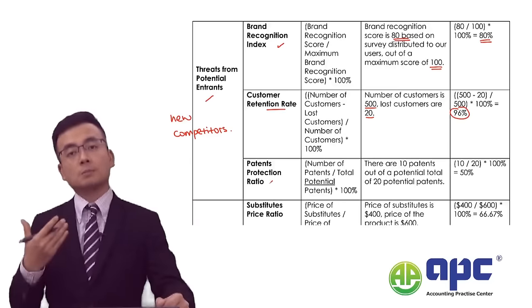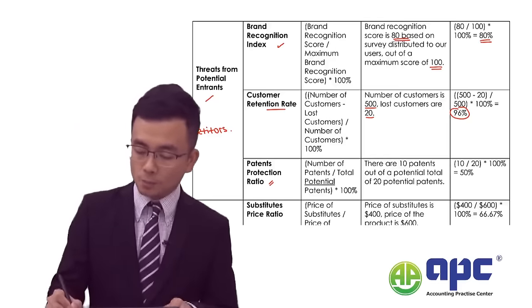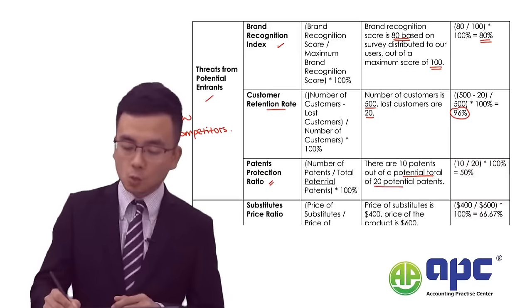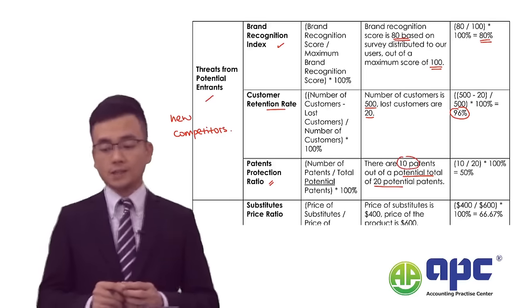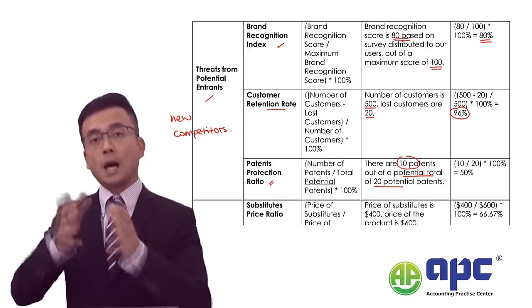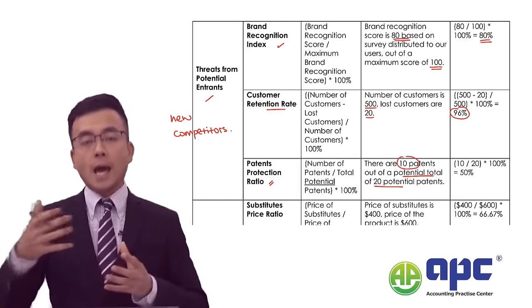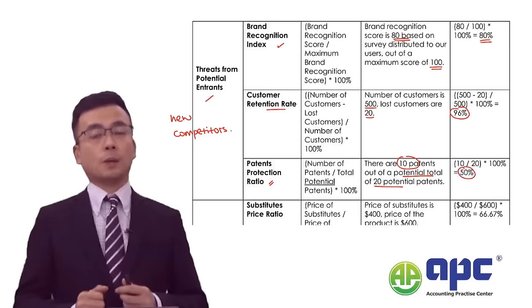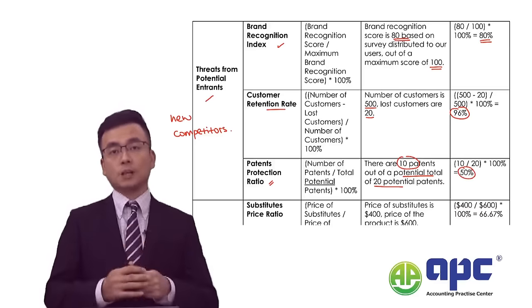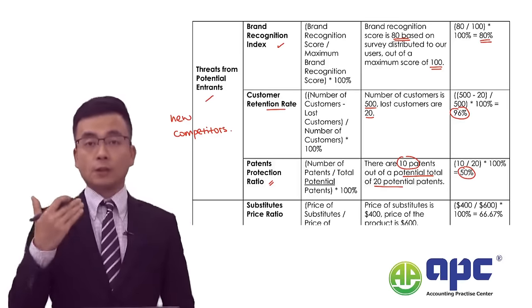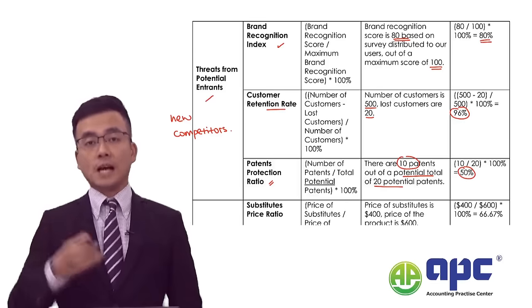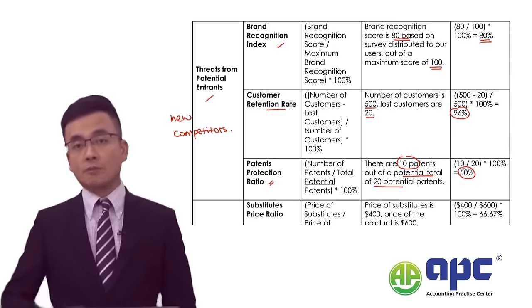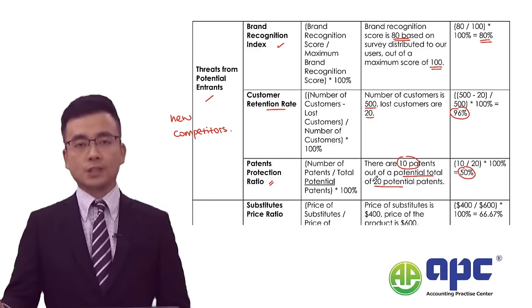We can also see the patent protection ratio. For example, if there are potentially 20 patents protecting our product and we have applied for 10, with an additional 10 pending, that accounts for 50% of the total patents. The patent protection ratio is very key — if it's low, new competitors can simply copy our processes and products without being punished.